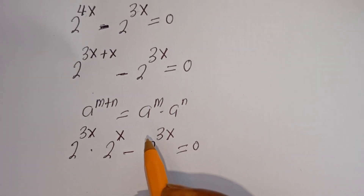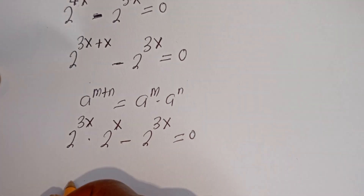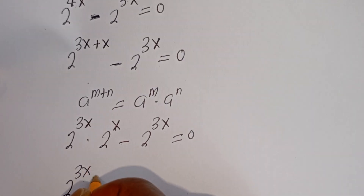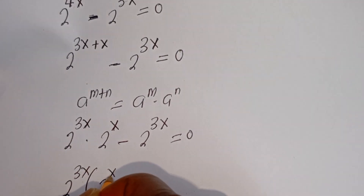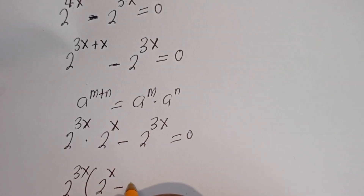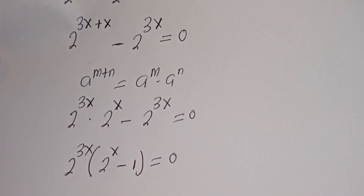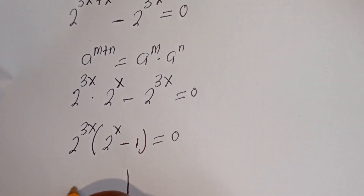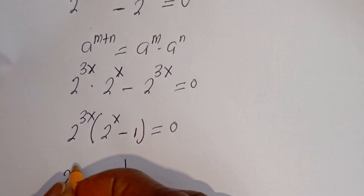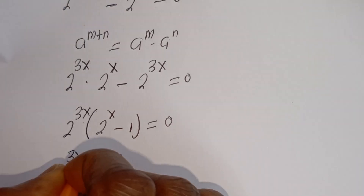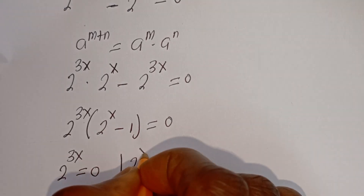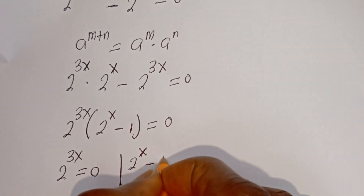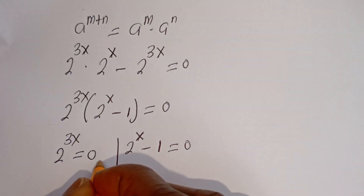Here, 2 to the power of 3x is common — let's bring it out. We have 2 to the power of 3x, bracket: if you divide this by this, we have 2 to the power of x minus, if you divide this by this, we have 1, is equal to zero. There are two cases here. The first case is 2 to the power of 3x is equal to zero, and the second case is 2 to the power of x minus 1 is equal to zero.